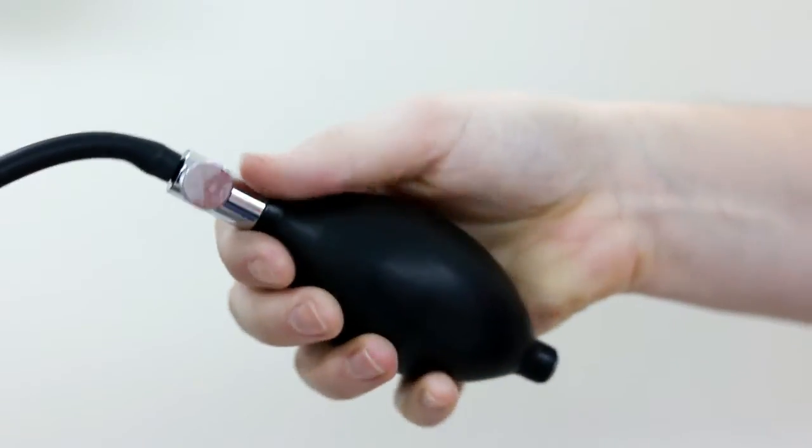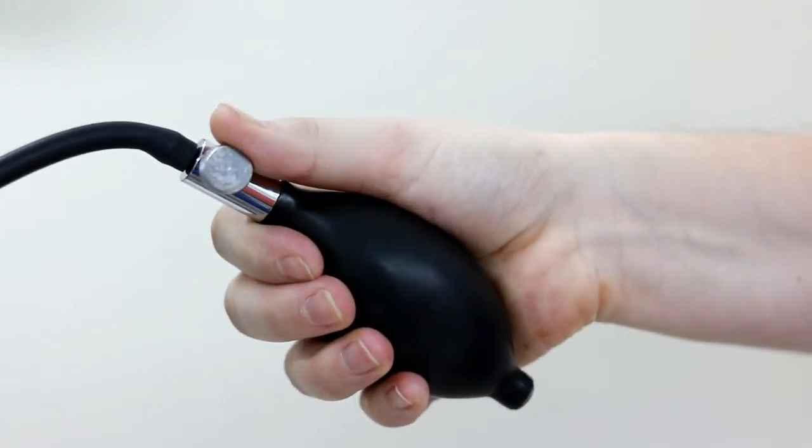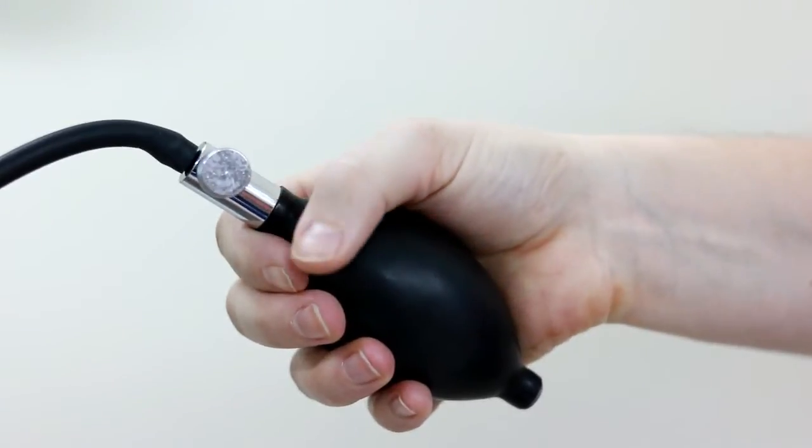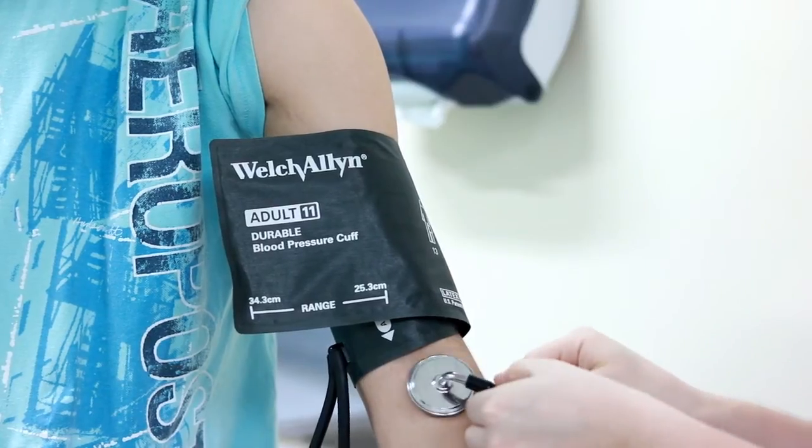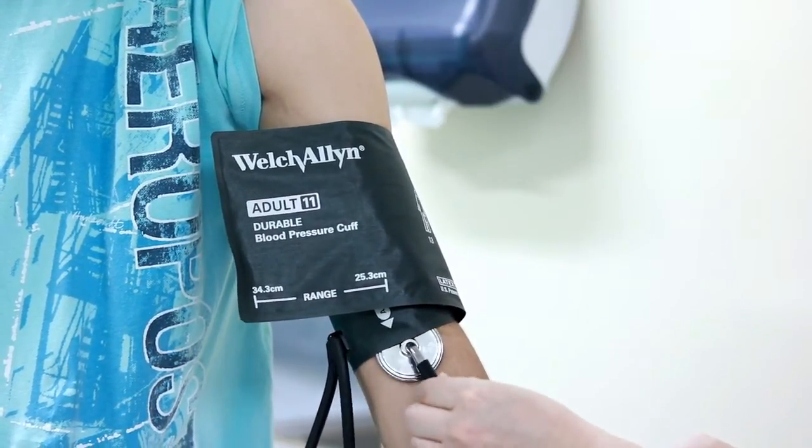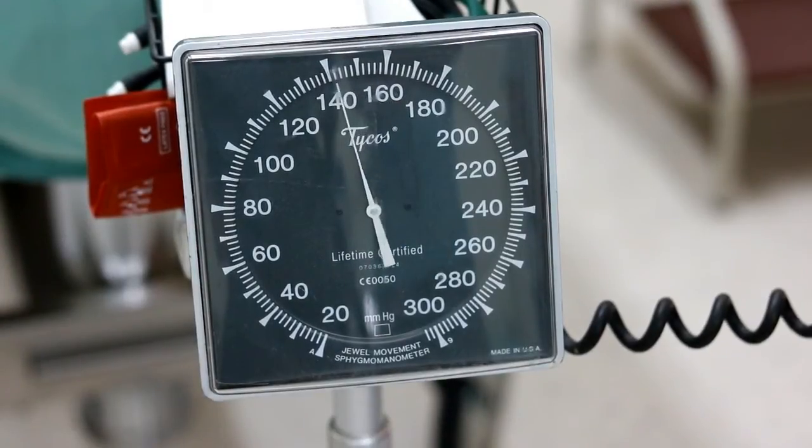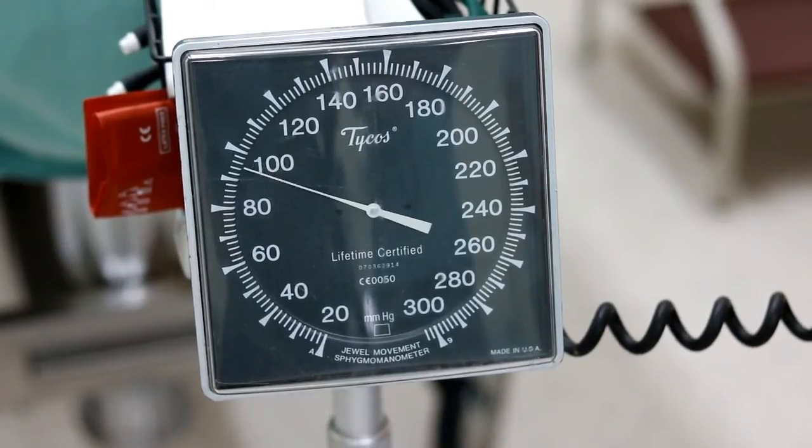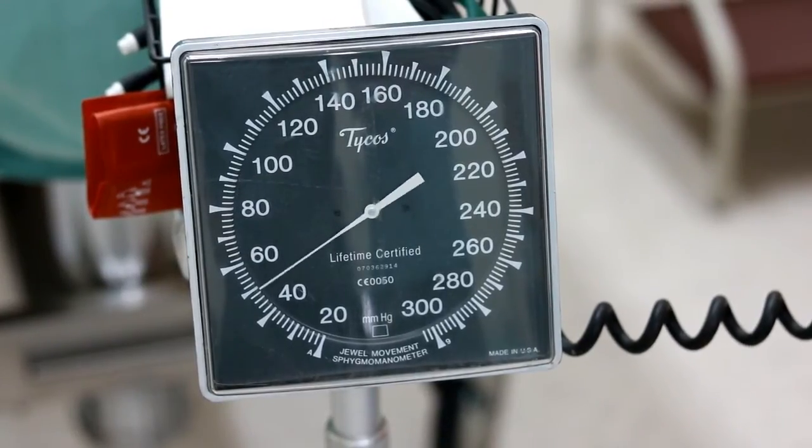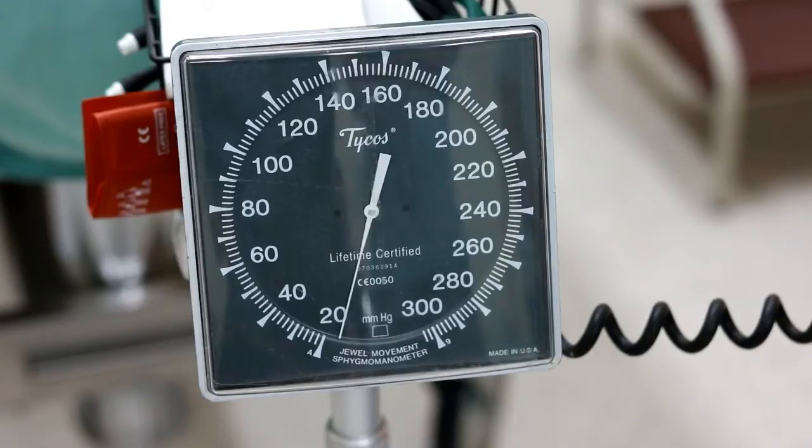After inflation, the valve is opened slightly to let the pressure slowly decrease. Listen for sounds as described previously to properly record the patient's blood pressure. This drop in pressure must occur slowly to ensure that the range during which the sounds of blood flow can be heard is accurately determined.